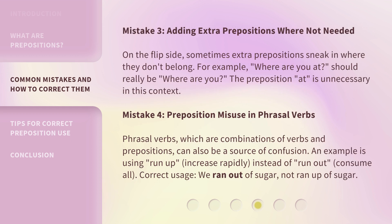Mistake 3: Adding extra prepositions where not needed. On the flip side, sometimes extra prepositions sneak in where they don't belong. For example, 'where are you at?' should really be 'where are you?' The preposition 'at' is unnecessary in this context.